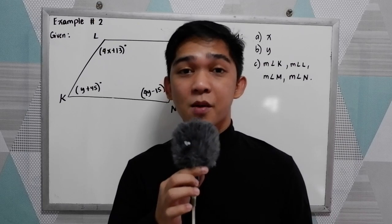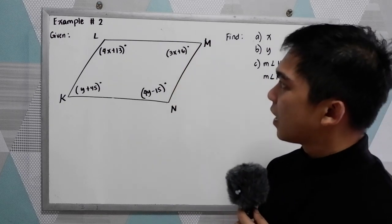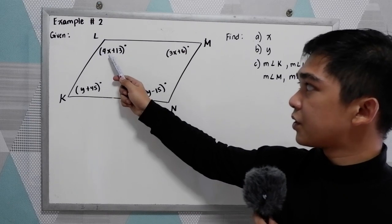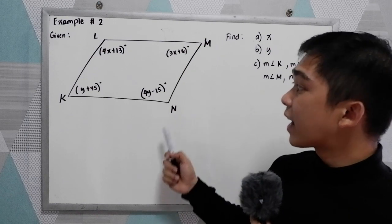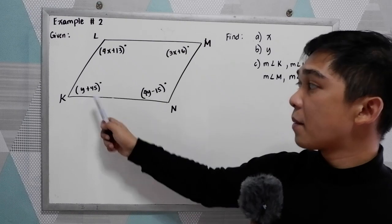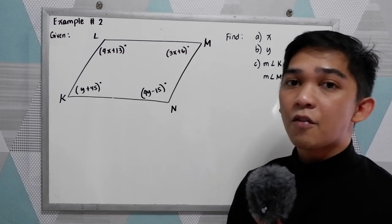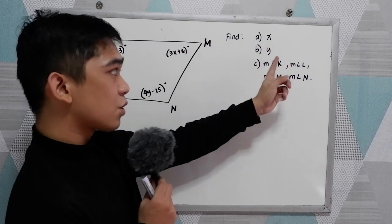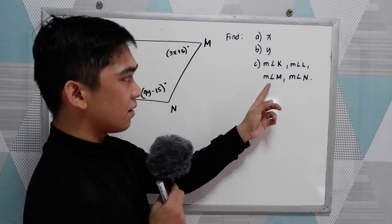Now let's have Example 2. Given parallelogram KLMN, the measure of angle L is 4X plus 13, angle M is 3X plus 6, angle N is 4Y minus 15, and angle K is Y plus 45. We will apply property number 3 to find X, Y, and the measures of angles K, L, M, and N.